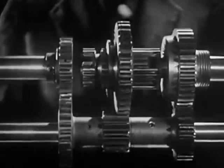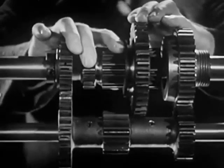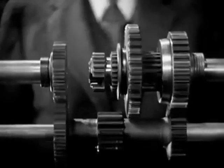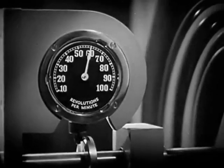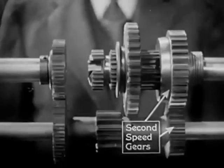After we've started the car rolling, we want fast pickup. So, we shift into second by sliding the sleeve backward to mesh with this gear on the shaft to the rear wheels. The wheel is now turning at 60 revolutions a minute, and the power flows through these gears.